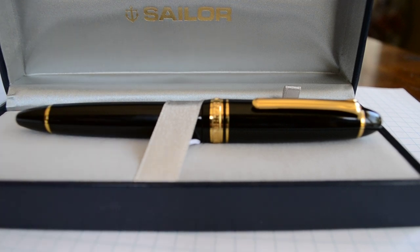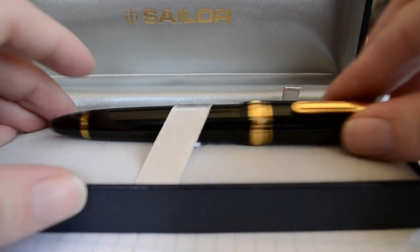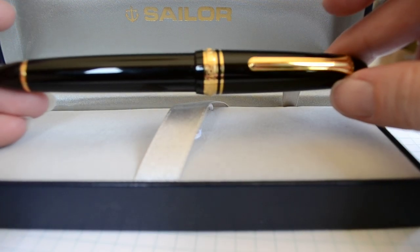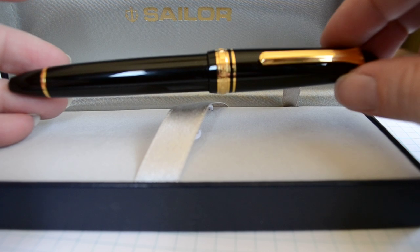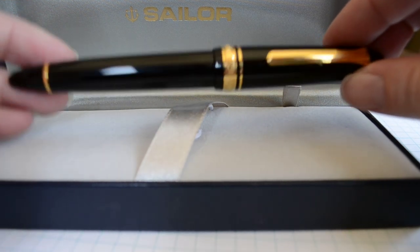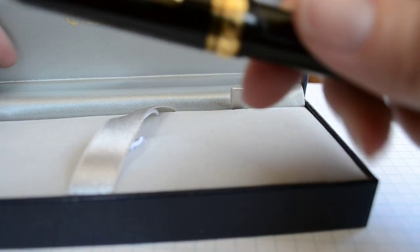This is the Sailor 1911 Large pen, a fountain pen brought to us by Japan. It's a little bit large as stated in the name. The father and son of the Nagahara family in Japan designed their nibs for Sailor for a very long time.